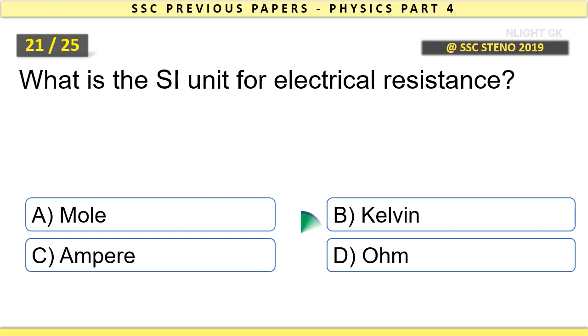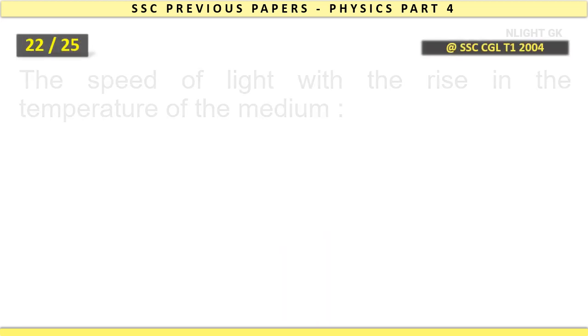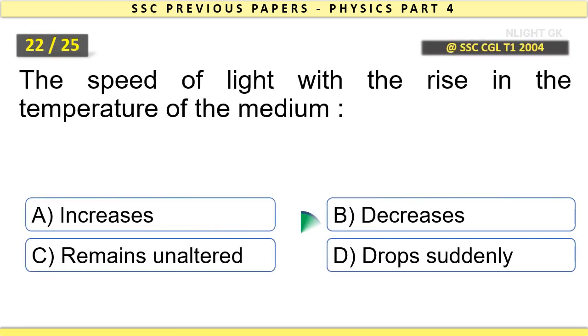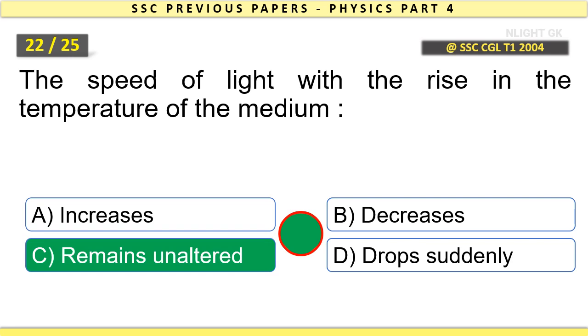What is the SI unit for electrical resistance? Ohm. The speed of light with the rise in the temperature of the medium remains unaltered.